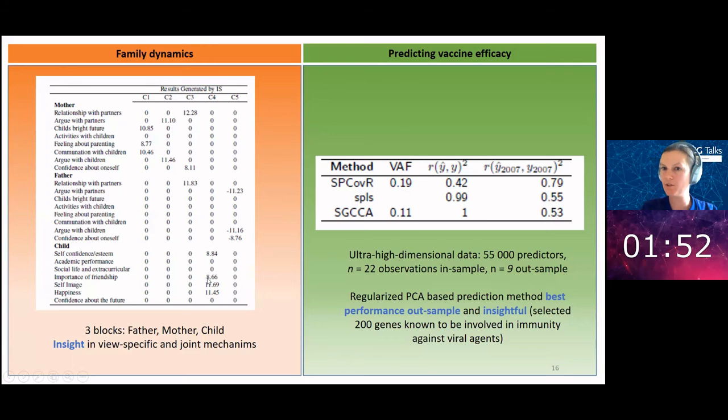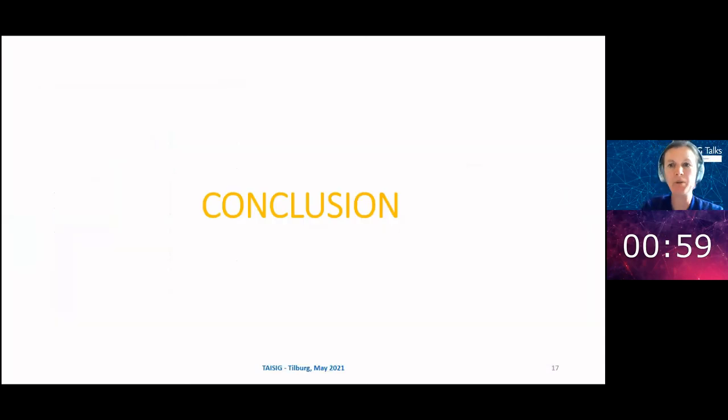The other example here is a prediction example where I used data on vaccination to predict whether a vaccine is working well. I think this is a relevant example for the time being. Using my methods, which is the SP cover method, we get an out-of-sample prediction that is much higher than for other state-of-the-art methods. What is interesting is that I had 55,000 predictor variables and the method only retained 200 variables. These genetic data were annotated with a tool and it showed that this was a very interpretable set of selected genes, all relating to viral sensing and the immune system.